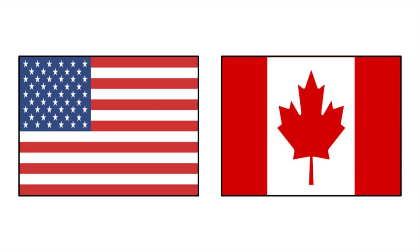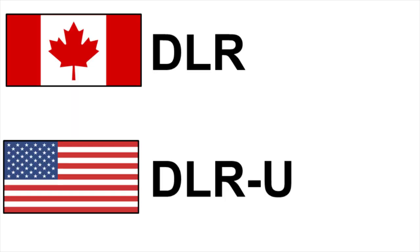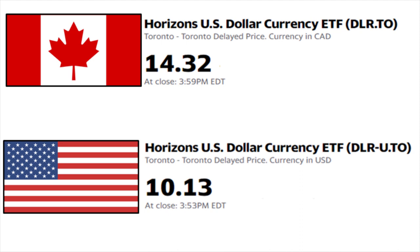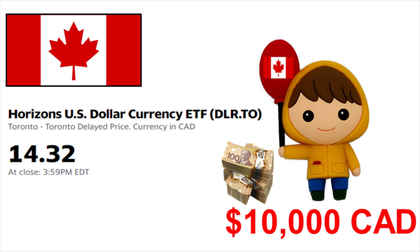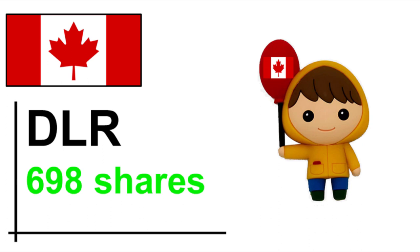How Norbert Gambit works is through investing in shares that are domiciled in both Canadian and US markets — meaning we invest in something that has both a Canadian version and a US version. For simplicity and without major price fluctuations, people usually do Norbert Gambit using DLR and DLR-U. They're both the Horizons US Dollar Currency ETF, but one is quoted in Canadian dollars and the other in US dollars. This investment simply lets you capture the price changes of the US dollar. Starting with $10,000 Canadian dollars, you would buy shares of DLR — at its current price, you can buy 698 shares.